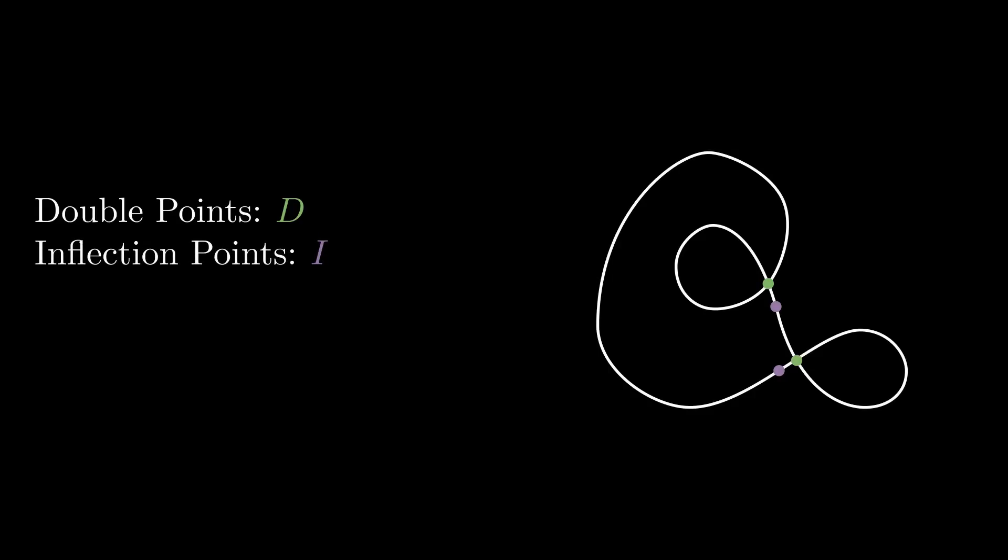An inflection point is a point where the signed curvature of the curve changes sign, or less precisely, it's where the curve stops bending in one direction and starts bending in a different direction.